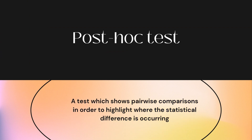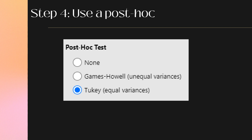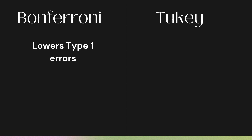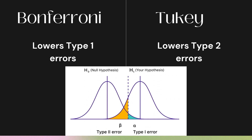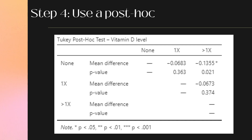Post-hoc literally translates to meaning 'after this.' It will generate a table showing all pairwise comparisons and let us know between which groups the statistical difference is being found. Step 4: We turn on our post-hoc test. The one we're using is called the Tukey test. Alternatively, you can use the Bonferroni post-hoc test. The difference between the two relates to type 1 and type 2 errors. The Bonferroni is quite strict, lowering our chance of a type 1 error but increasing our risk of a type 2 error — use it when the consequence of a type 1 error is worse. The Tukey test is less strict; it can lead to a higher risk of a type 1 error but lowers our chance of a type 2 error, so choose it when type 2 errors are of greater concern.